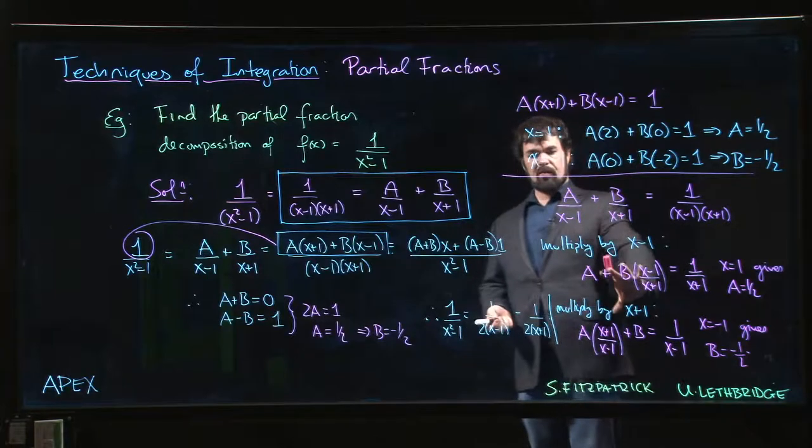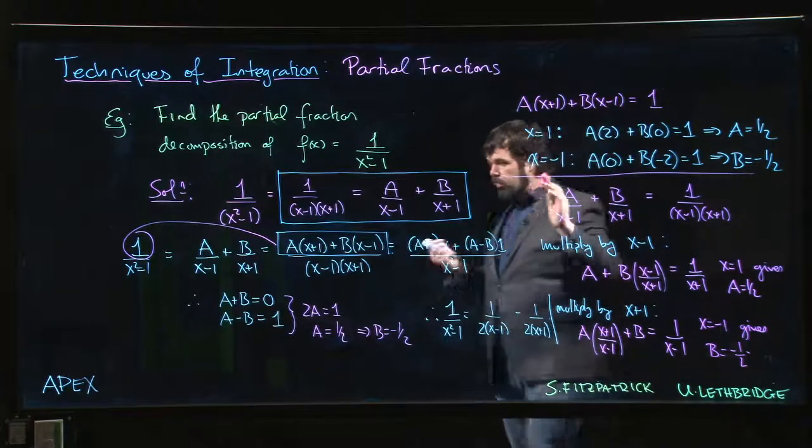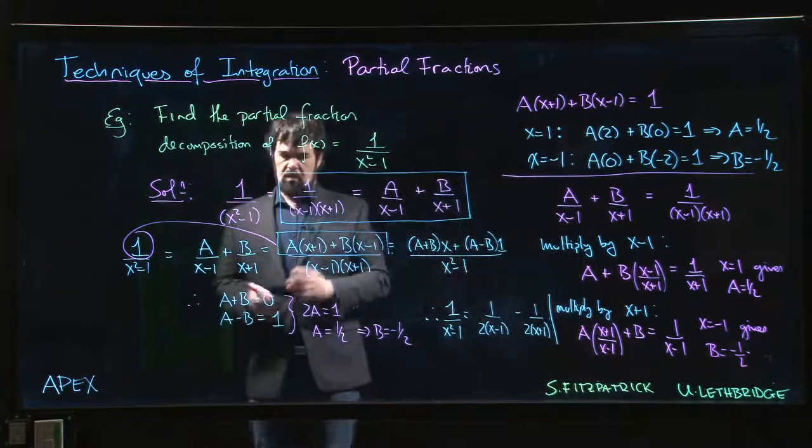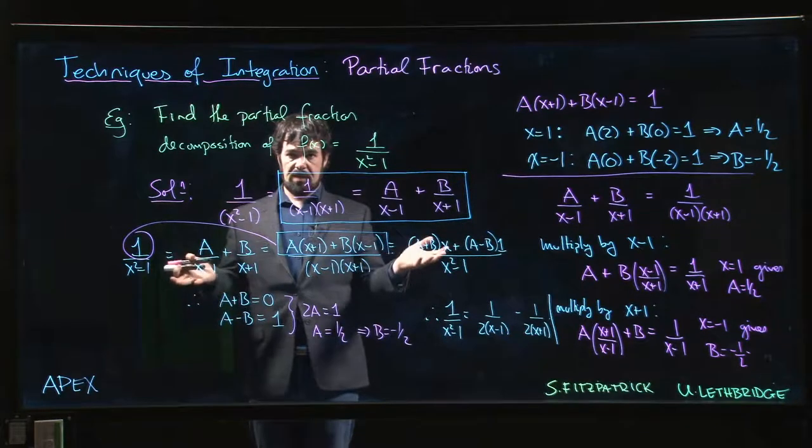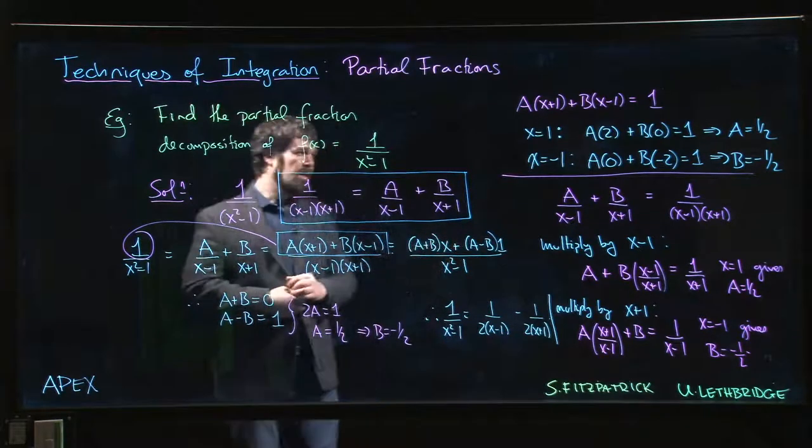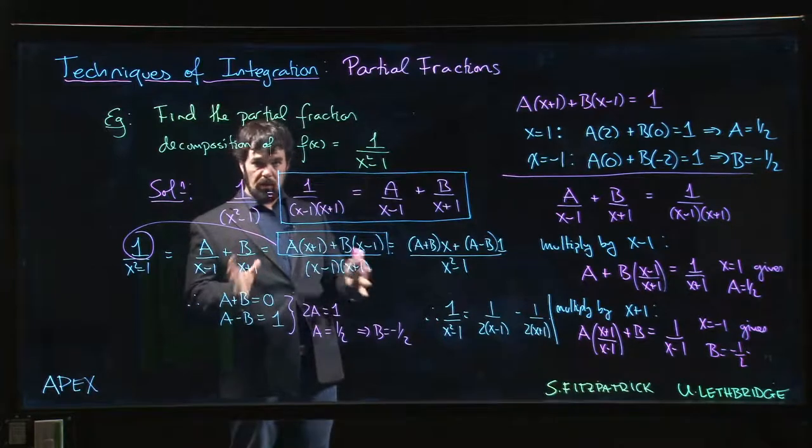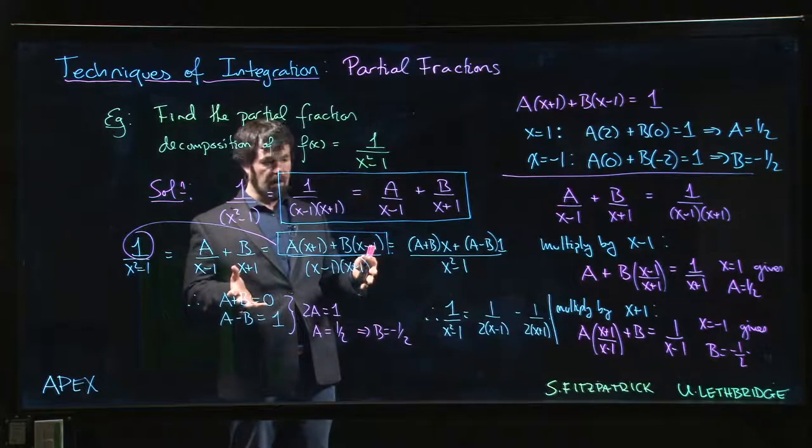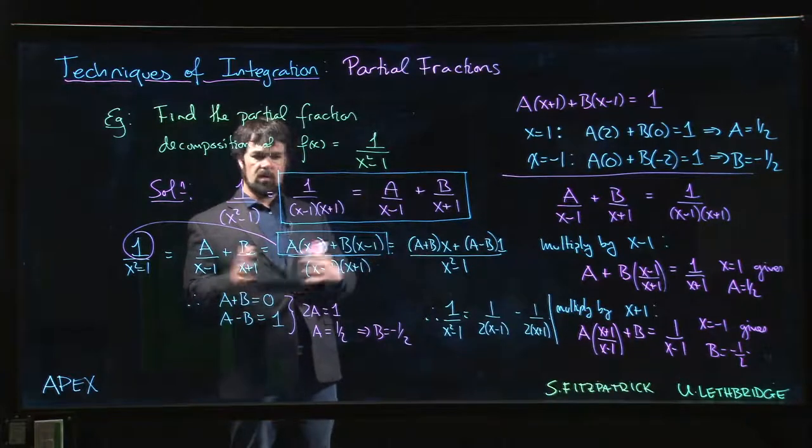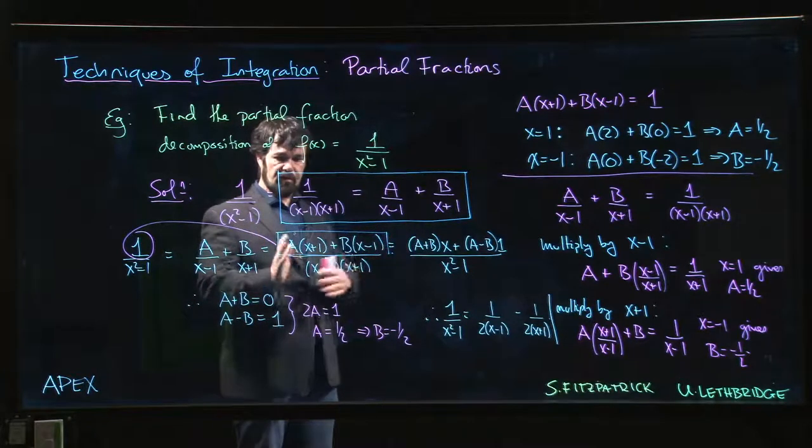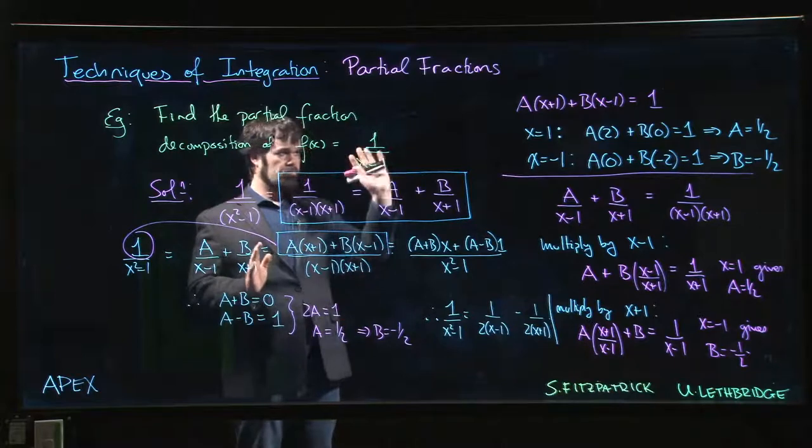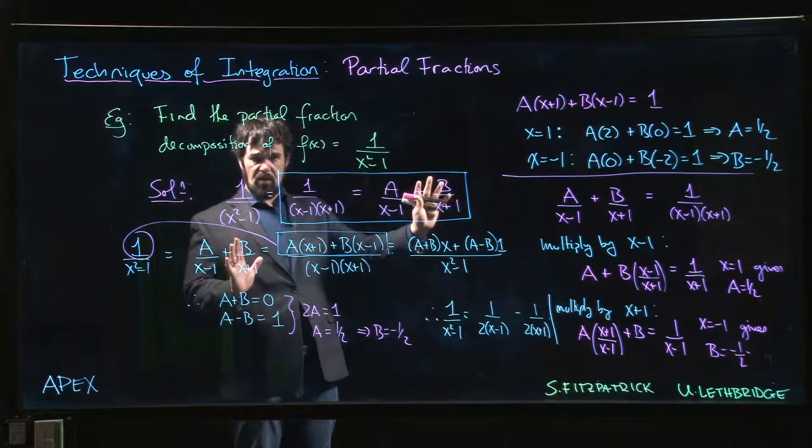So this approach is of course very similar to this one. There are three possible methods here—you pick the one that works best for you, bearing in mind that we haven't yet discussed what to do if you've got a repeated root or a quadratic factor. But if you can factor completely in terms of distinct linear terms, these approaches will get you your coefficients right away.